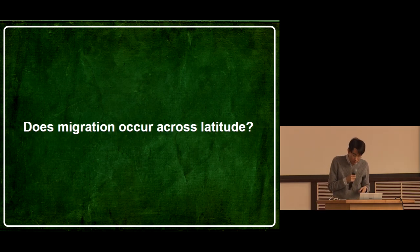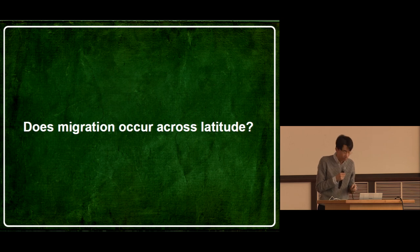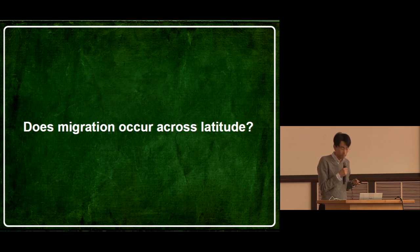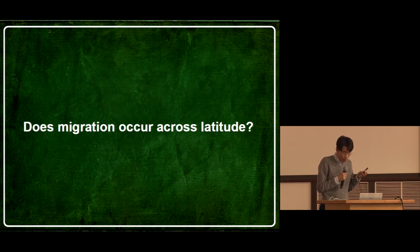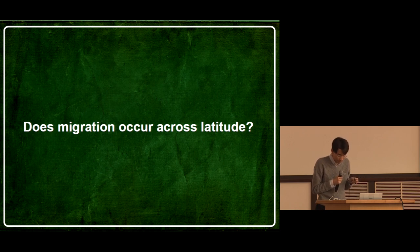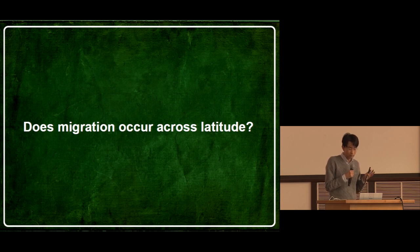Looking at the three habitats across latitudes, it seems evident that the environmental conditions are different among populations for this species. I have studied the relationship between environments and shell morphology for about 20 years, but the topic I will talk about today is another question: how often does migration occur across latitudes in this species?